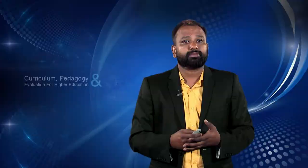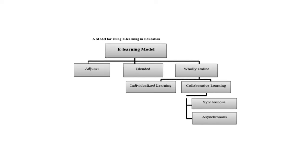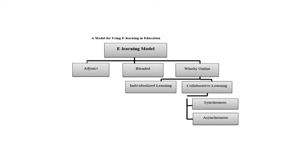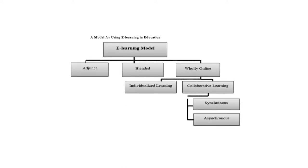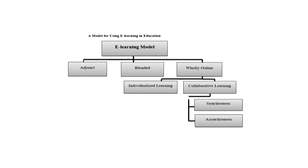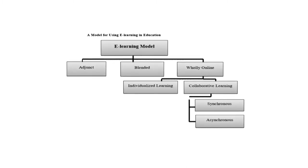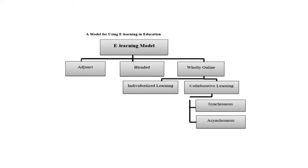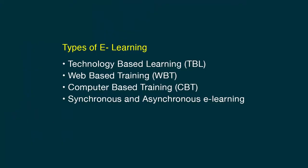E-learning modalities can also be divided into three modes: adjunct, blended, and fully online. Fully online is further divided into individualized learning and collaborative learning, with collaborative learning subdivided into synchronous and asynchronous. The most common types of e-learning are: technology-based learning, web-based training, computer-based training, and synchronous and asynchronous learning.